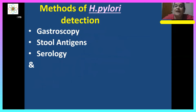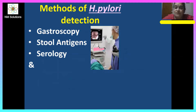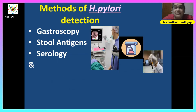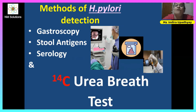Methods of H. pylori detection: gastroscopy can be one of them, stool antigens can be detected, serological samples can be detected. But most importantly, the one which we are talking about is the 14-carbon urea breath test.